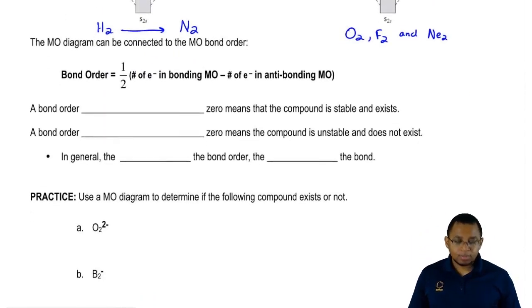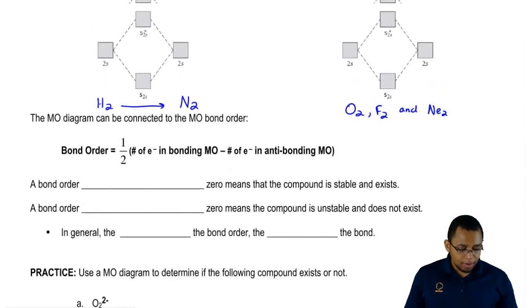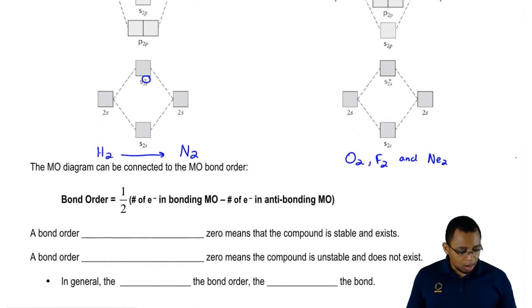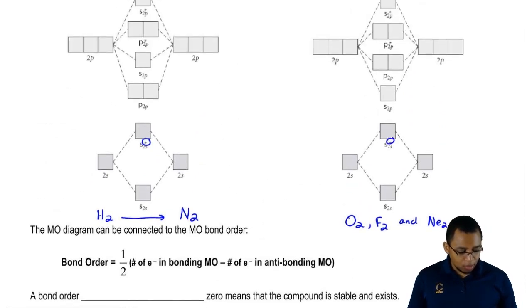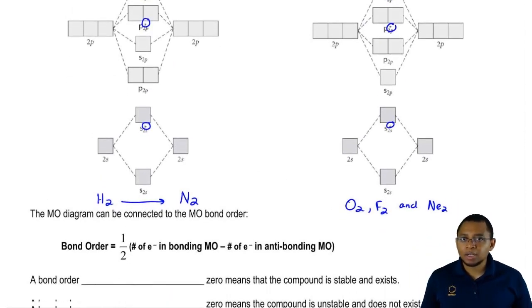We're going to say bond order equals half times the number of electrons in bonding molecular orbitals minus the number of electrons in the anti-bonding molecular orbitals. Remember, the ones with stars are the anti-bonding molecular orbitals. The ones with no stars in them, those are our regular bonding molecular orbitals.